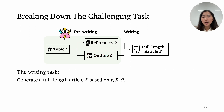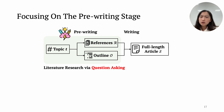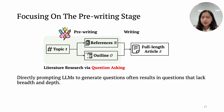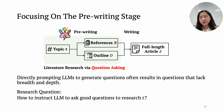For the writing task, we now have additional information R and outline O along with the topic T to produce the final article. Given the strong generation ability of language models, we believe the actual writing stage is more straightforward, and we place our focus on the pre-writing stage by trying to use language models to do literature research via question asking. In our preliminary experiments, we found that directly prompting a language model does not work very well — it results in questions that lack breadth and depth, such as basic what, when, and where questions. The new research question here is how to instruct language models to ask good questions.